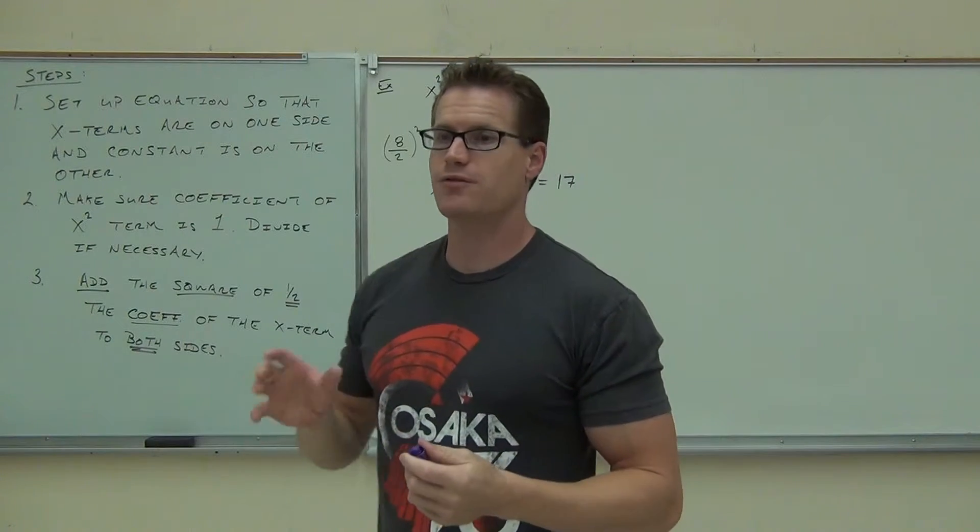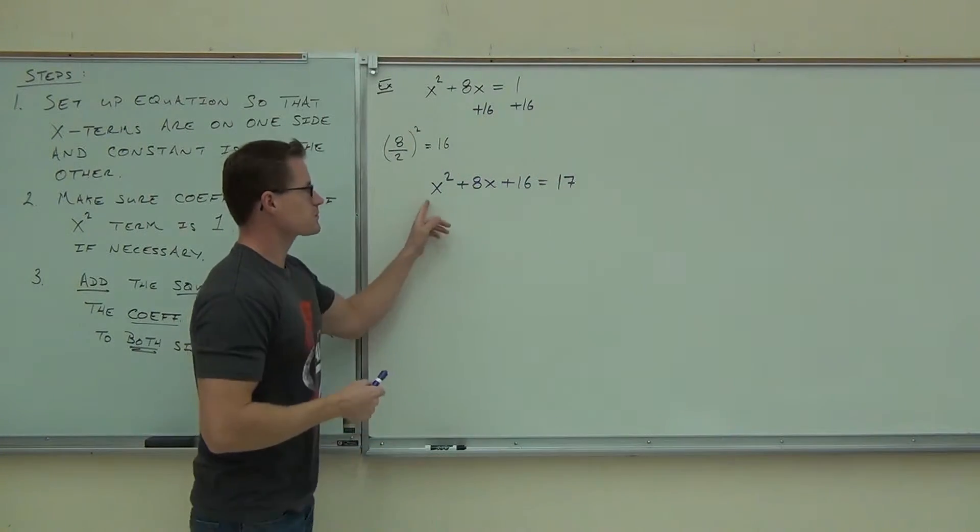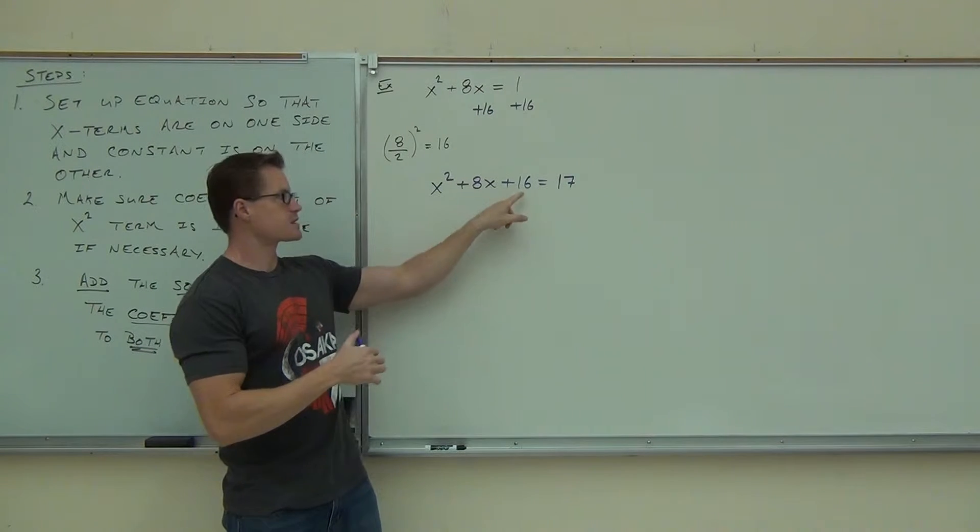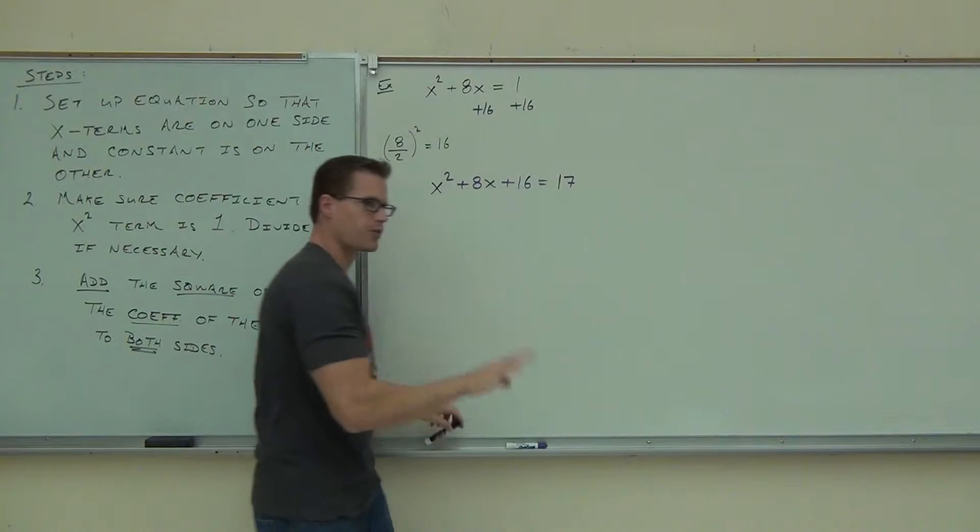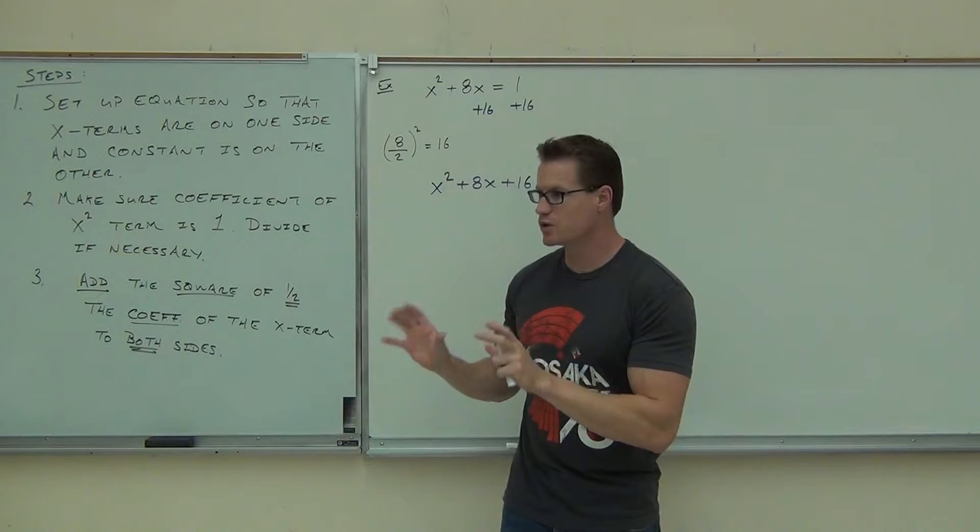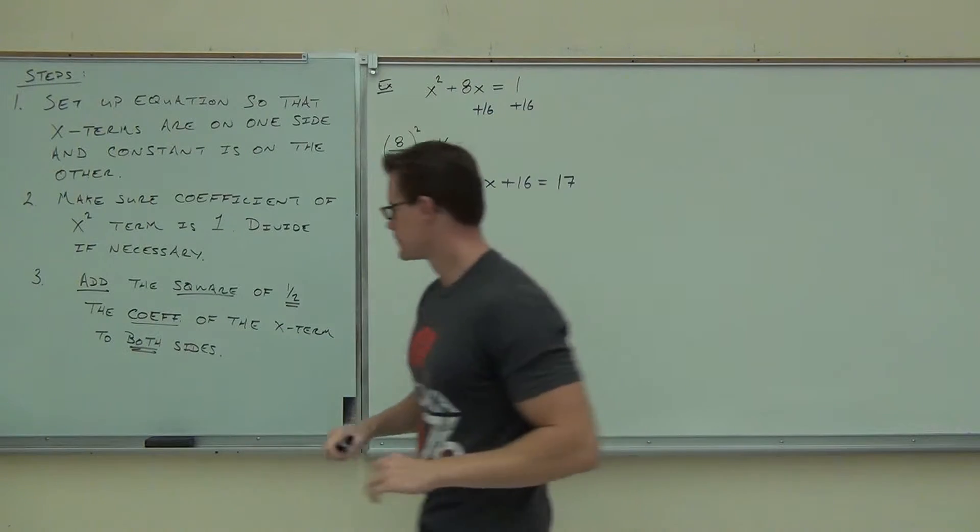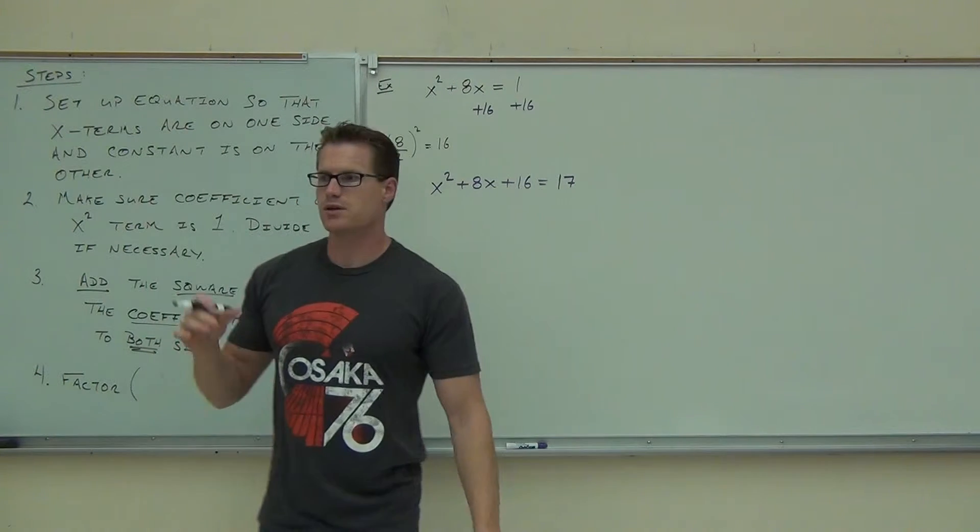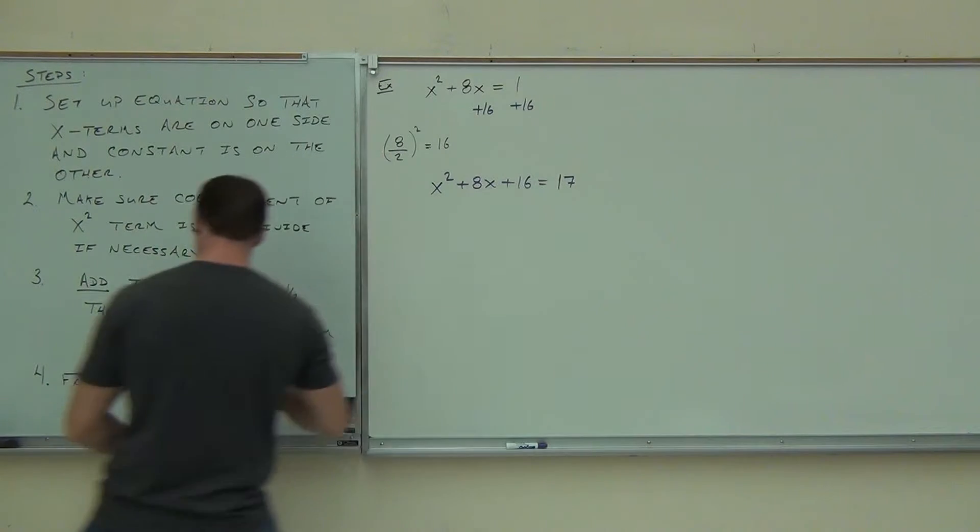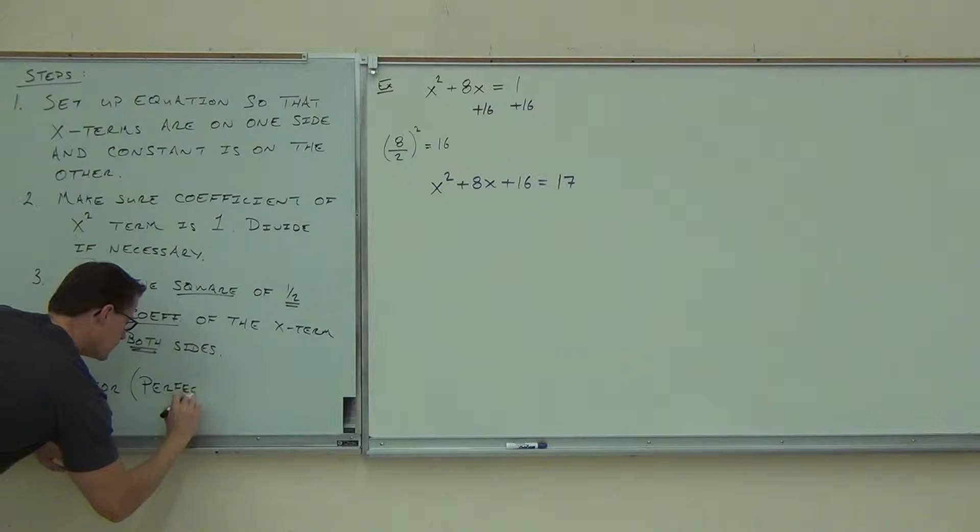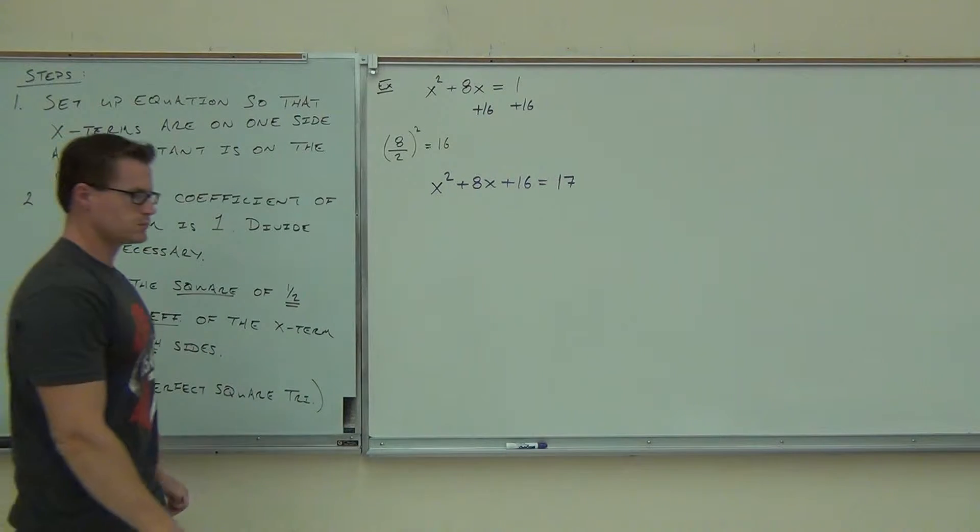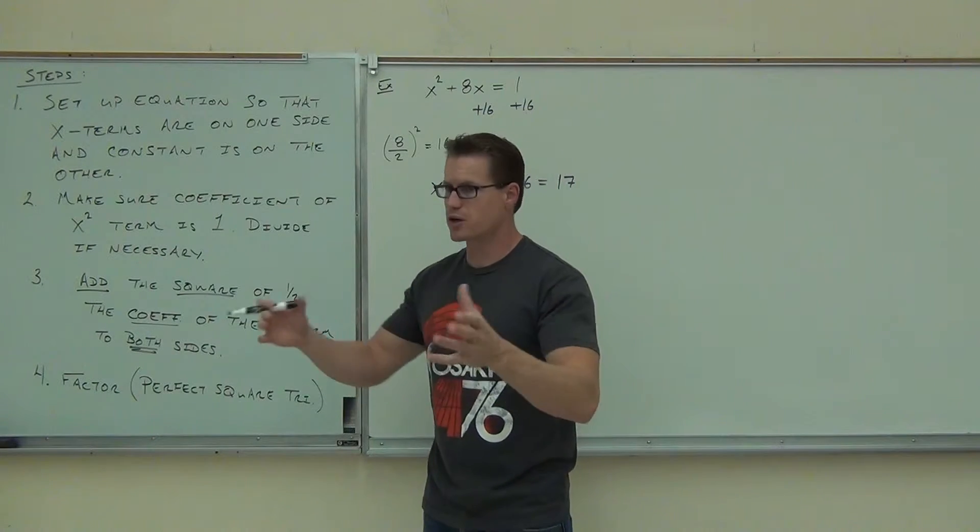After this, it really goes back down to factoring and then solving. So on our left-hand side, we can actually factor that. Because right now, this thing is a perfect square trinomial. This is the square of half that number. We know we can factor this. So step number four is you're going to factor because one of these sides will be a perfect square trinomial. That's actually what completing the square means - you're completing the perfect square trinomial.